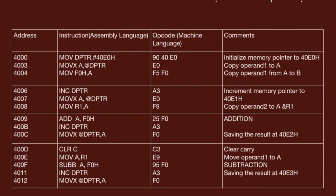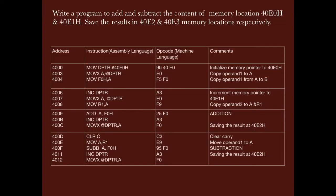Coming to the subtraction part: first of all we clear the carry which might have been generated by the addition operation. Since the accumulator contents are modified and now hold the result of the addition, we take the operand from R1 back into register A, then perform the subtraction operation, increment the memory pointer, and save the result of the subtraction in 40E3H.